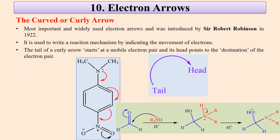Then there are electron arrows, also called curved or curly arrows. The most important and widely used arrows in chemistry, they were introduced by Sir Robert Robinson in 1922. They are used to write reaction mechanisms by indicating the movement of electrons. The tail of a curly arrow starts at the mobile electrons and its head points to the destination of the electron pair. It is also used when an electron pair attacks from a nucleophile to an electrophilic site, showing the movement or shifting of an electron pair.